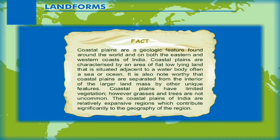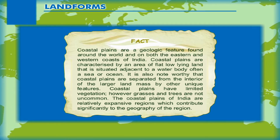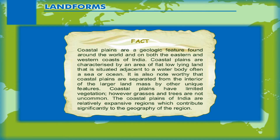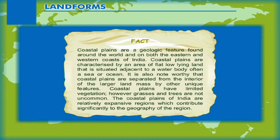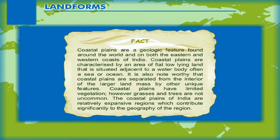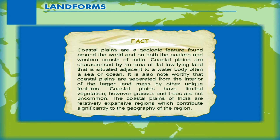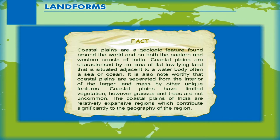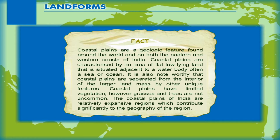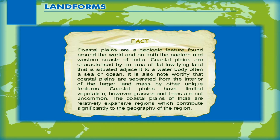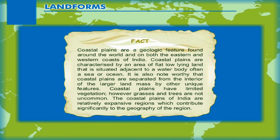Fact: Coastal plains are a geological feature found around the world and on both the eastern and western coasts of India. Coastal plains are characterized by an area of flat, low-lying land situated adjacent to a water body, often a sea or ocean. They are separated from the interior of the larger land mass by other unique features. Coastal plains have limited vegetation; however, grasses and trees are not uncommon. The coastal plains of India are relatively expansive regions which contribute significantly to the geography of the region.